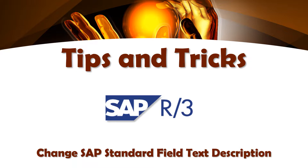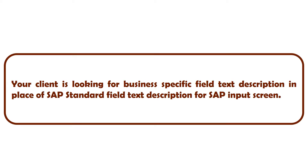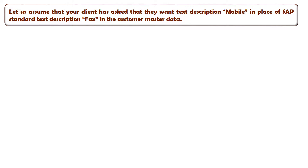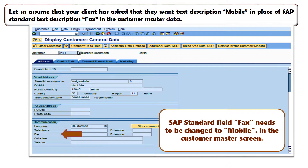In this video we are going to discuss how to change a SAP standard field text description with a client-specific text description. The business case is that your client is looking for business-specific field text description in place of the SAP standard field text description. For example, your client wants the text description 'mobile' in place of SAP standard text description 'fax' in the custom master data.